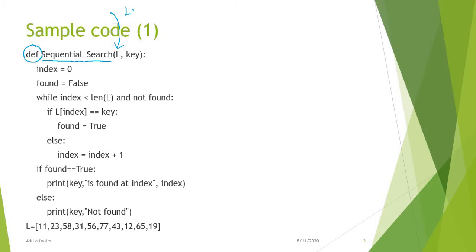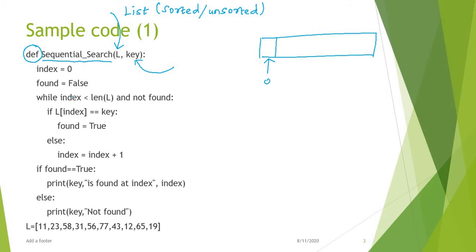One input is the list, which may be sorted or unsorted. The second input is the key — what you want to find in the list. Initially the index is zero. We know that in Python the index starts with zero. I am also defining another variable, a boolean: found equals false. Intentionally I am setting it to false because I don't know how many items I have to go through.